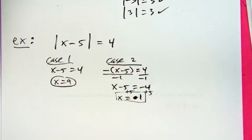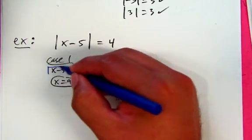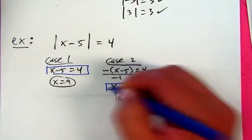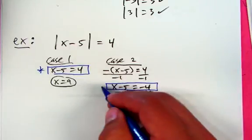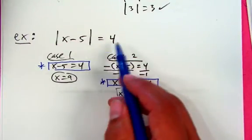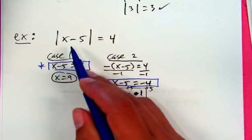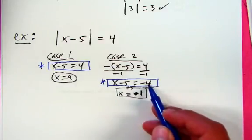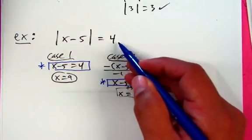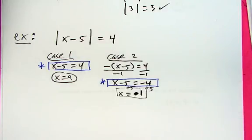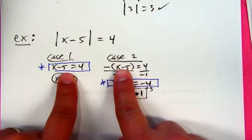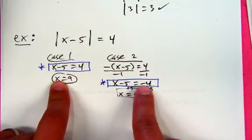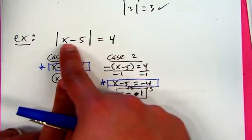A lot of you from Algebra 1 or Honors Algebra might just start by setting whatever is in the absolute value equal to 4 and equal to negative 4, since those are the two values that have that absolute value. That's totally fine. I don't really have a preference between using the definition exactly or skipping that first step.